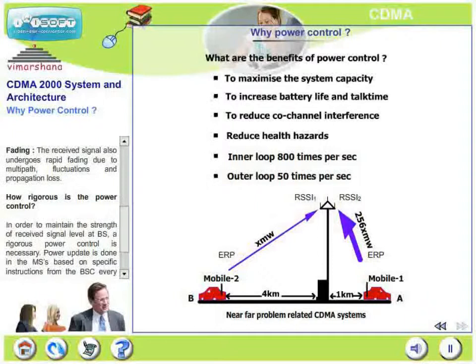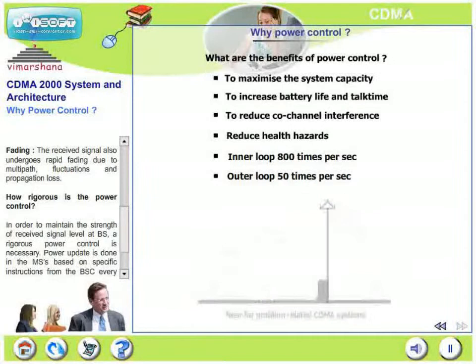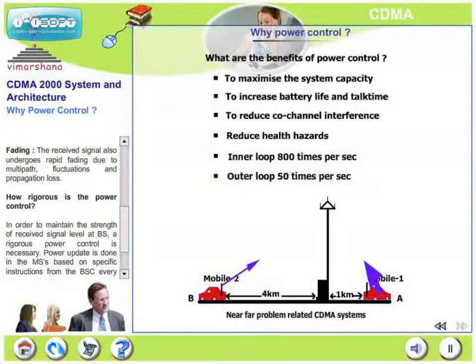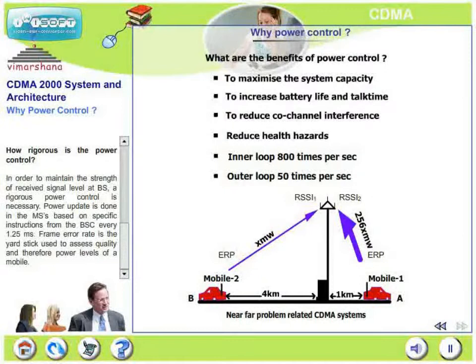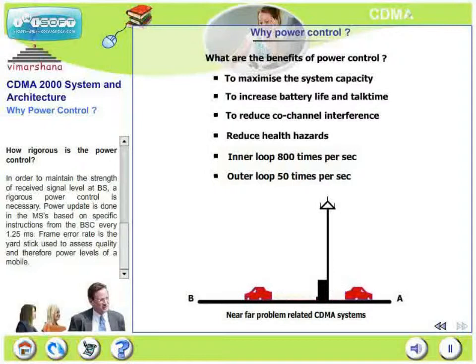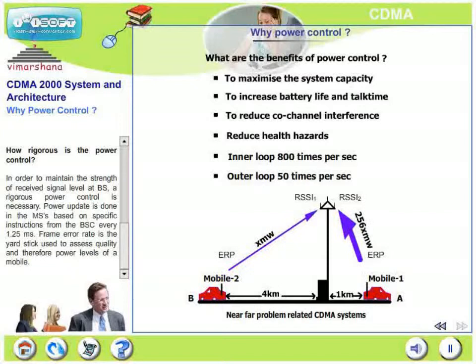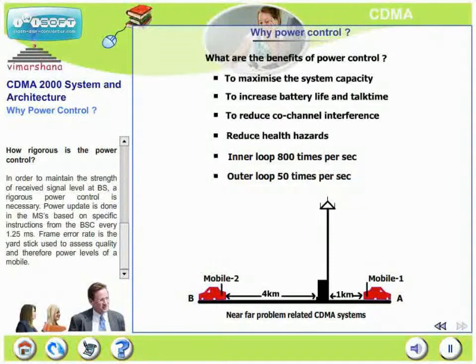The received signal also undergoes rapid fading due to multipath fluctuations, propagation loss, and so on — including short-term Rayleigh fading and long-term propagation fading. In CDMA, power control is very rigorous. To maintain uniform received signal strength at the base station, power updates are done in the mobile based on specific instructions from the BSC and BTS every 1.25 milliseconds — that is 800 times every second. The base station constantly instructs the mobile to increase or decrease its power by a fraction, using frame error rate as a yardstick to assess overall quality.